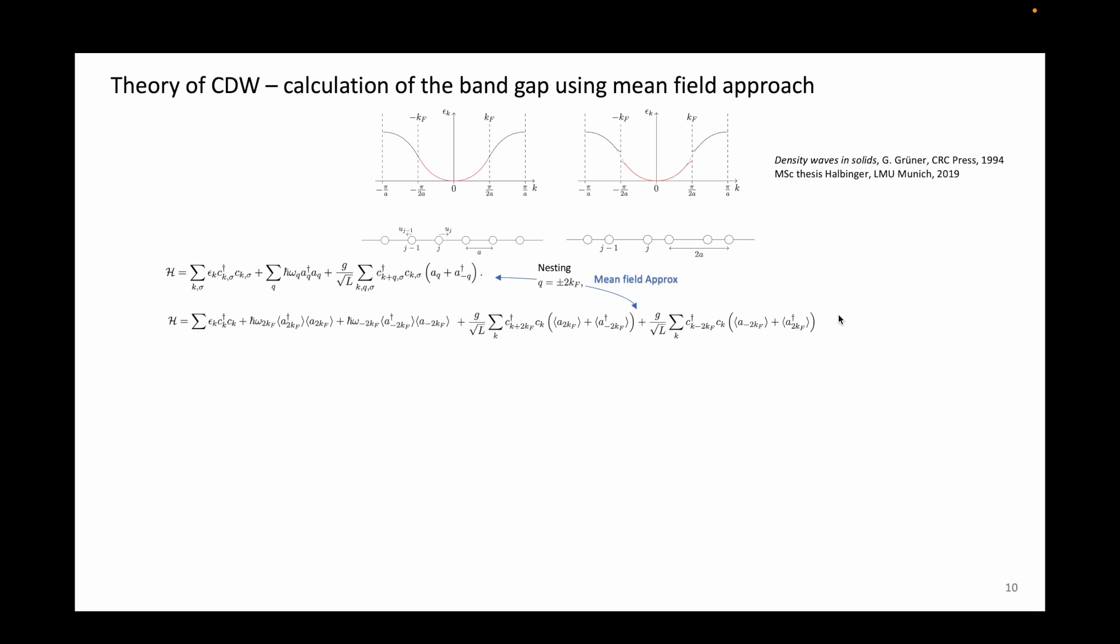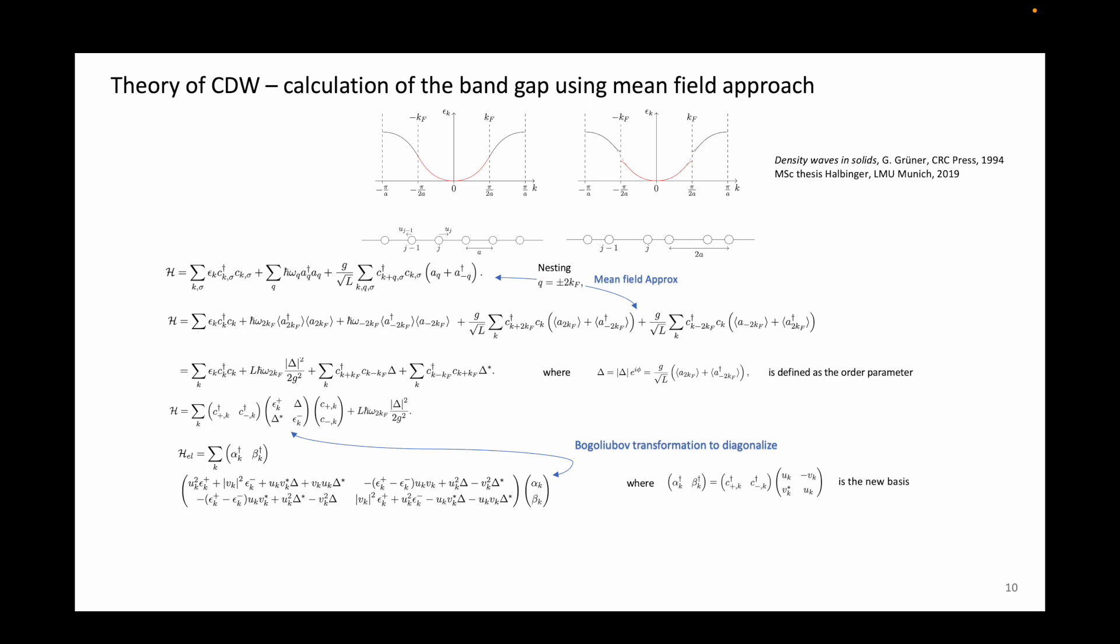This can be reorganized by introducing the order parameter delta, which similarly to the delta of superconductivity is the charge density wave band gap. This can now be expressed in a matrix form. Disregarding the phonon term for now, the solution to this matrix can be achieved if we apply the Bogoliubov transformation to diagonalize the matrix, where the alpha and beta is the new basis. After this transformation, we set the off-diagonal terms to zero and solve for the parameters nu and u. Skipping over the math, we get this new Hamiltonian where we can disregard the electrons above the band gap, since we start off with a metal at half-filling before the transition and a band gap to appear after the transition to the charge density wave state.